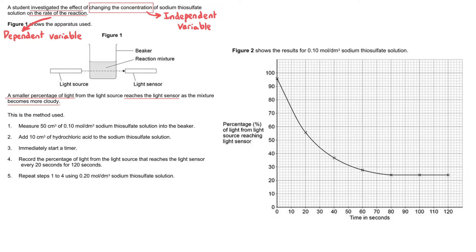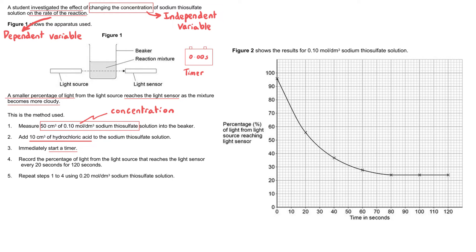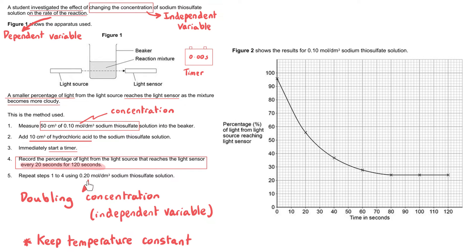Here is the method used. They added 50 cm³ of 0.1 mol/dm³ sodium thiosulfate solution to a beaker, then added 10 cm³ of hydrochloric acid, immediately started the timer, and recorded the percentage of light reaching the light sensor every 20 seconds for 120 seconds. They then repeated the steps using 0.2 mol/dm³ sodium thiosulfate solution — double the concentration.